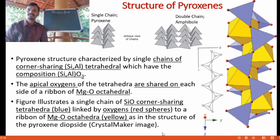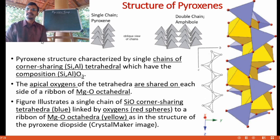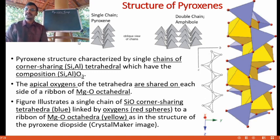Now let's look at the structure of pyroxenes. You have seen the single chain and double chain silicate structure in the B-C plane or Y-Z plane, where it shares two oxygens in SiO4 tetrahedra forming an elongated chain. Here I am showing the oblique view of chain silicates, with the left side showing the single chain pyroxenes and the right side showing the double chain structure of amphibole. Pyroxene structure is characterized by Si or Al tetrahedra with their corners sharing, forming a chain with the composition Si-Al-O3.